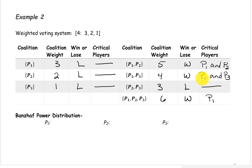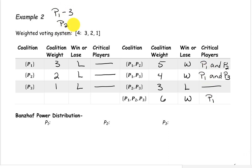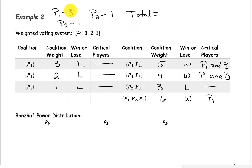Now we need to count up how many times each player was critical. Player 1 was critical 3 times. Player 2 was critical only once, and player 3 was also only critical one time. The total number of times that all players were critical is 3 plus 1 plus 1, which is 5.